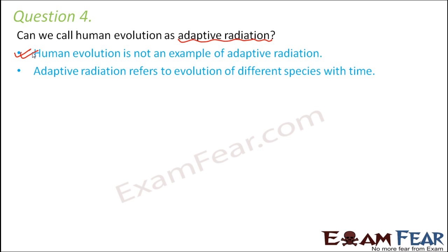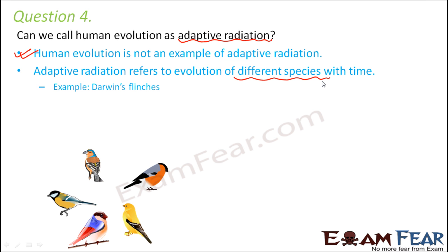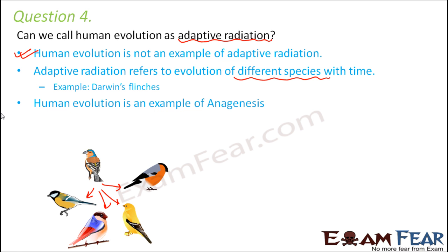Adaptive radiation refers to evolution of different species with time, and in human evolution different species did not evolve. Darwin's finches are a good example of adaptive radiation, where one species of finch entered the island and later gave rise to around 13 to 15 species of finches.